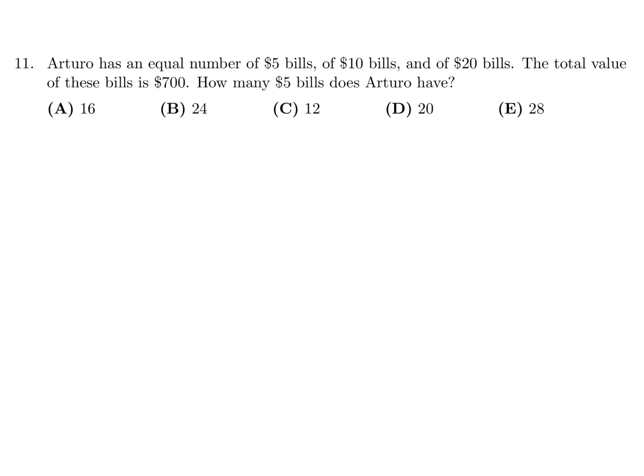Arturo has an equal number of $5, $10, and $20 bills. The total value is $700. How many $5 bills does Arturo have? So let's say the number of bills is X, meaning he has X $5 bills, X $10 bills, and X $20 bills. So the equation would be 5X plus 10X plus 20X equals 700.